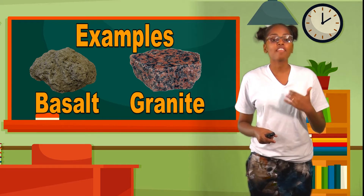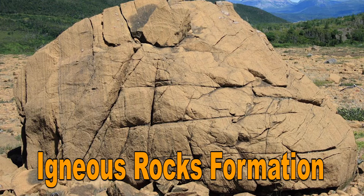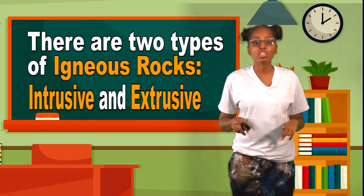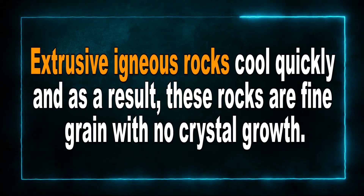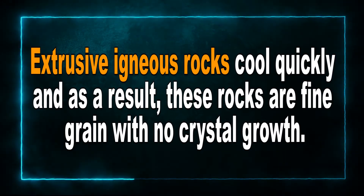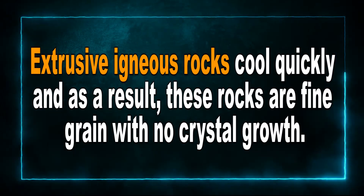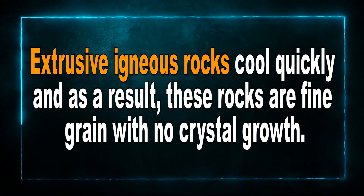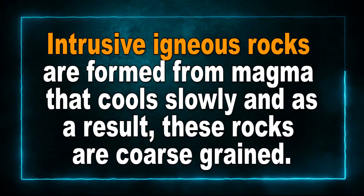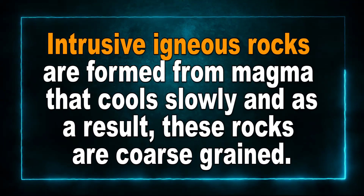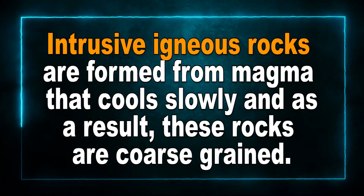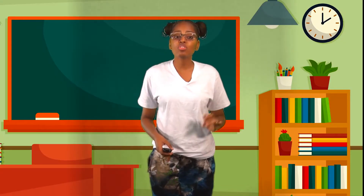Most igneous rocks are very hard. Some of the most spectacular rock formations on our planet are made of igneous rocks. There are two types of igneous rocks: extrusive and intrusive. Extrusive igneous rocks cool quickly, and as a result these rocks are fine-grained with no crystal growth. However, intrusive igneous rocks are formed from magma that cools slowly, and as a result these rocks are coarse-grained.